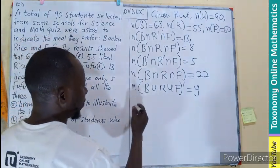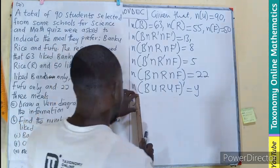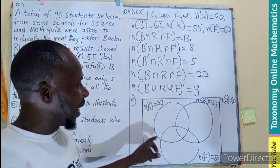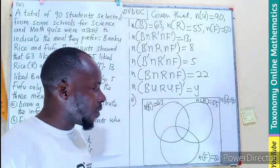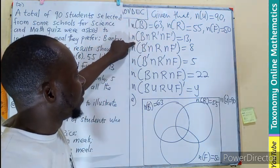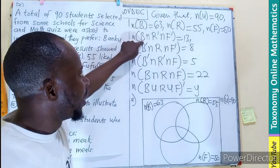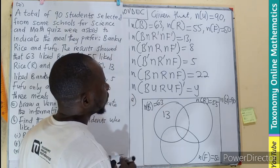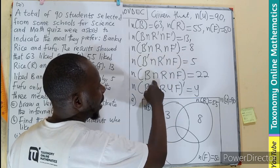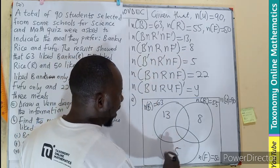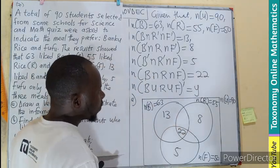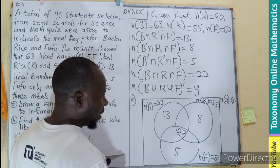Let's look at part A. We have to indicate that in our Venn diagram. This is the Venn diagram with three-set intersection: the first circle for Bangku, second for Rice, and the third for Fufu. Only Bangku is 13, only Rice is 8, only Fufu is 5, the intersection of all three is 22, and their union complement is also noted.